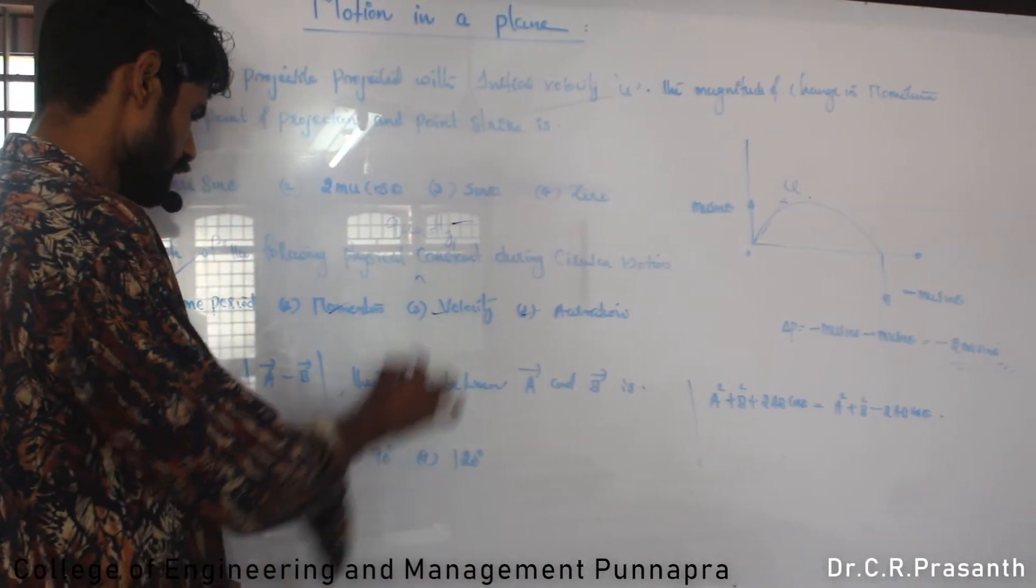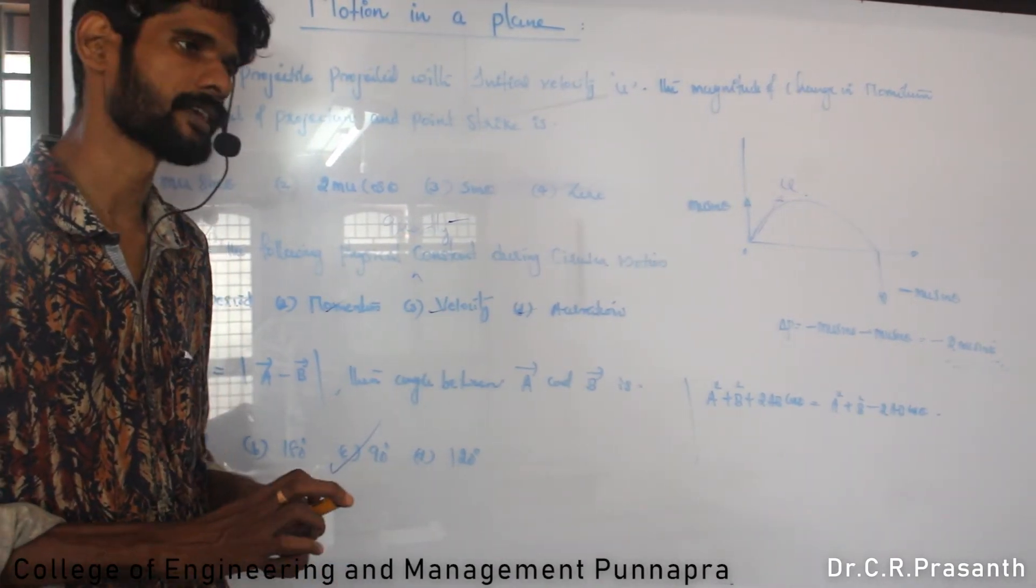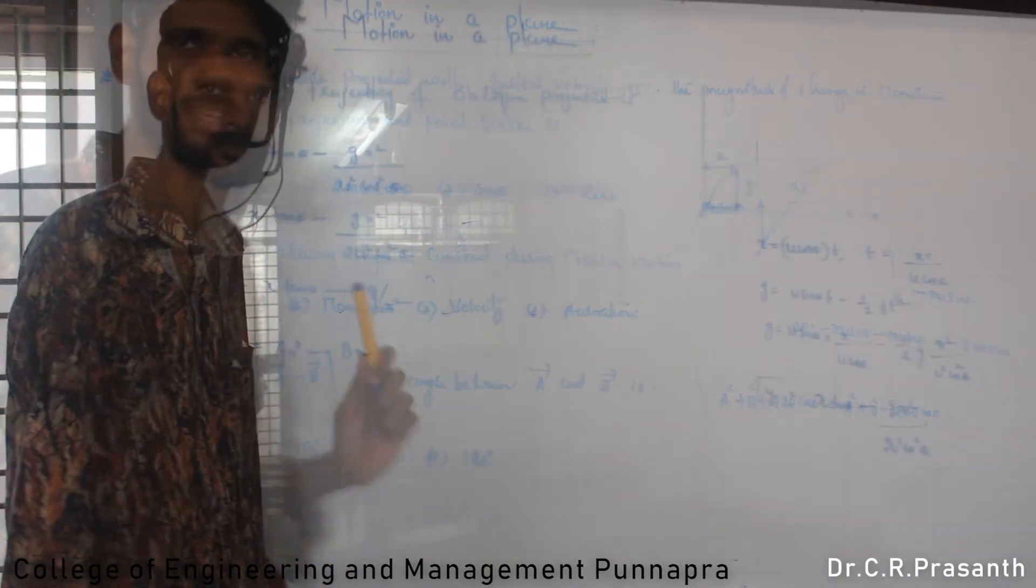Vector A plus B equals vector A minus B. The angle between them is 90 degrees. If two vectors are perpendicular, then their sum and difference are equal. Option 3 is correct.